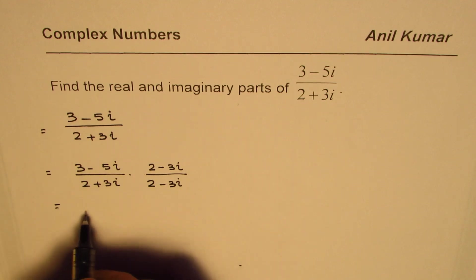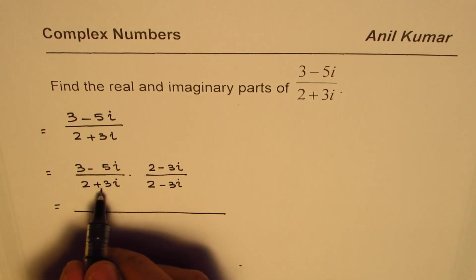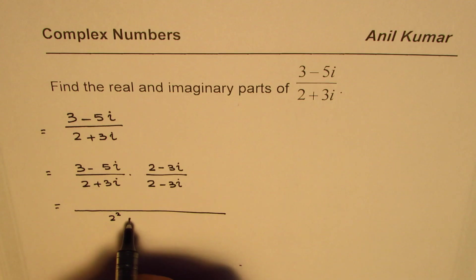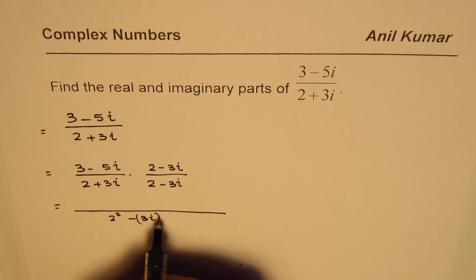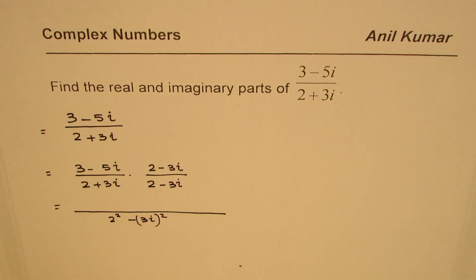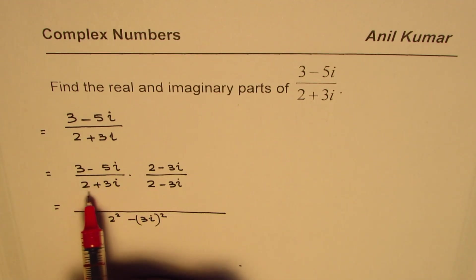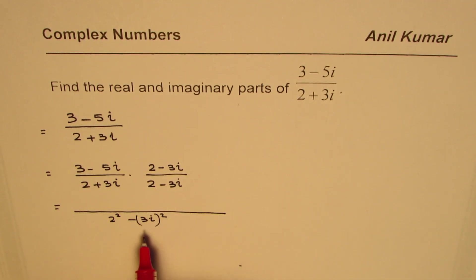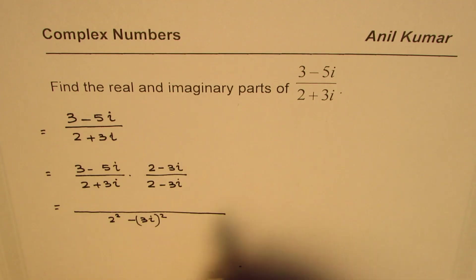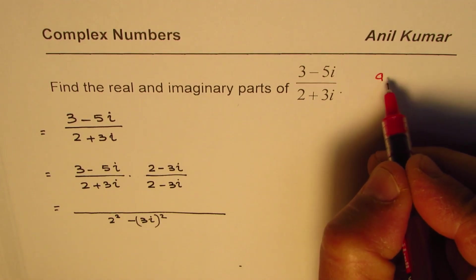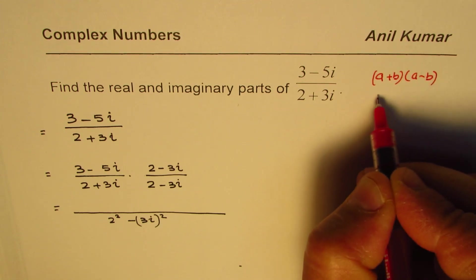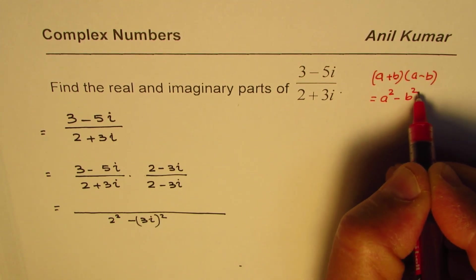When you do so, the denominator becomes (2 plus 3i)(2 minus 3i), which equals 2 squared minus (3i) squared. You could expand using the distributive property, or use the formula: (a plus b)(a minus b) equals a squared minus b squared.